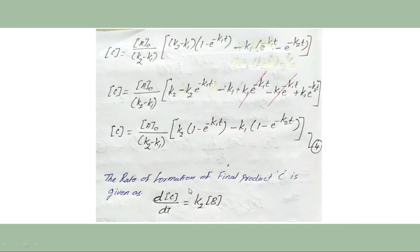The rate of formation of the final product C is given by K2·[B]. These are the different equations by which we can calculate the molar concentration of reactant A, intermediate B, and final product C at any interval during the reaction.